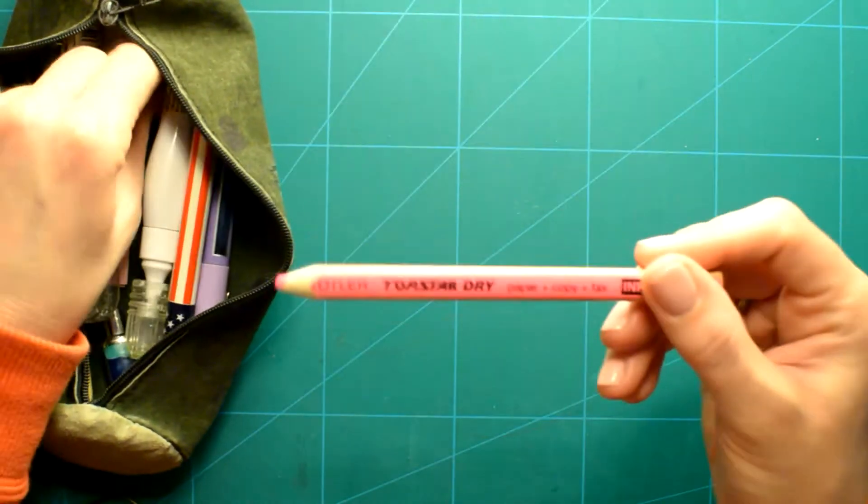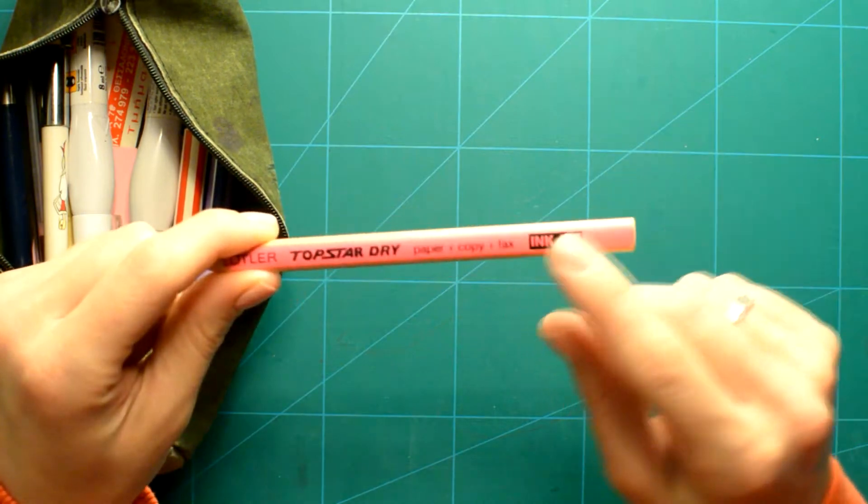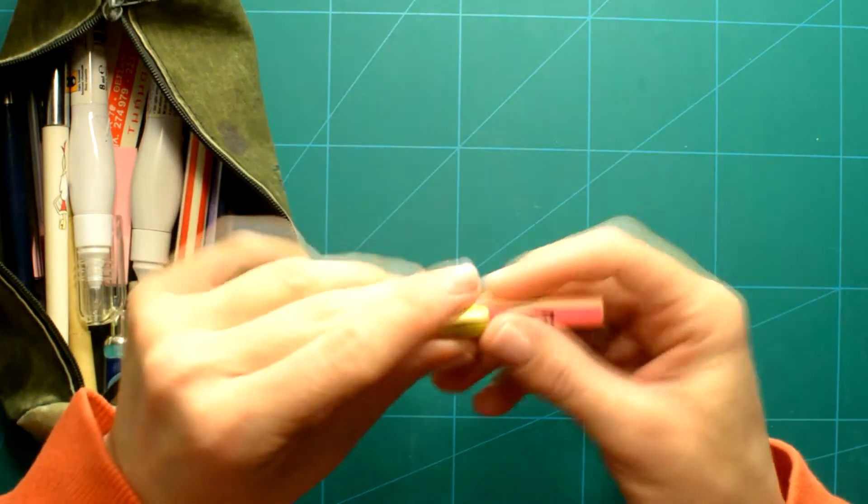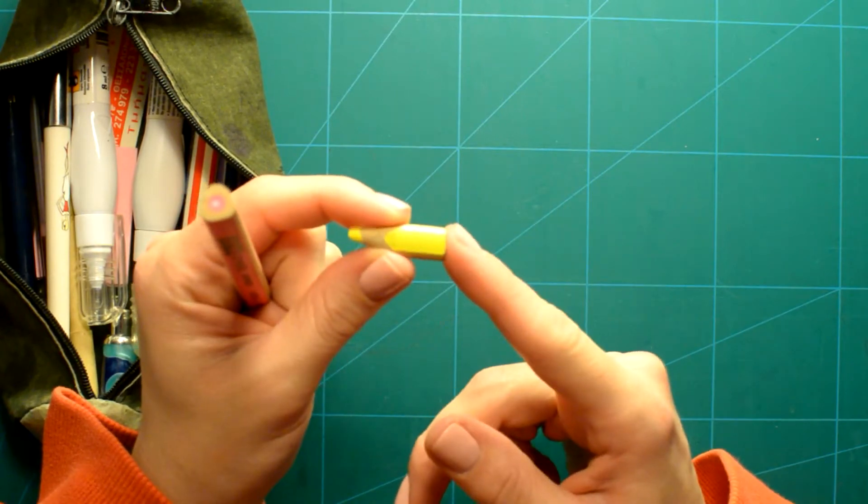I've got two highlighters, pencil highlighters from Staedtler. This is in the hot pink. And this one, which is almost completely finished, it's the neon yellow one.